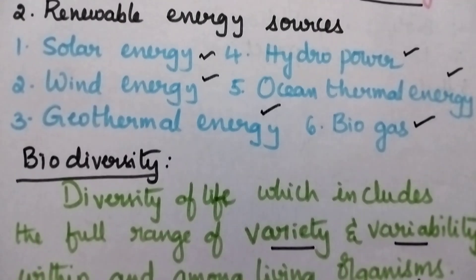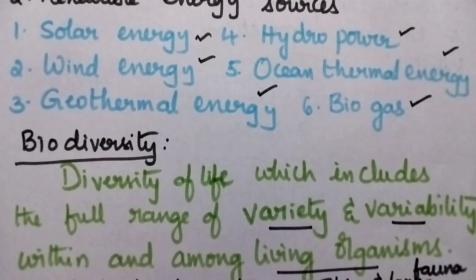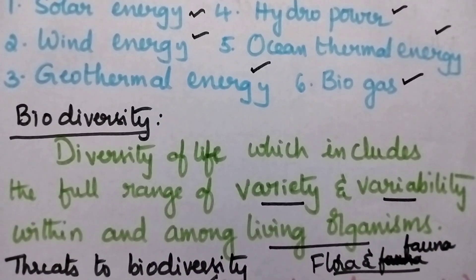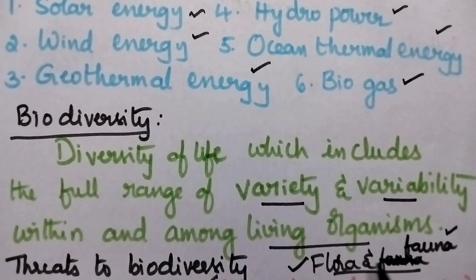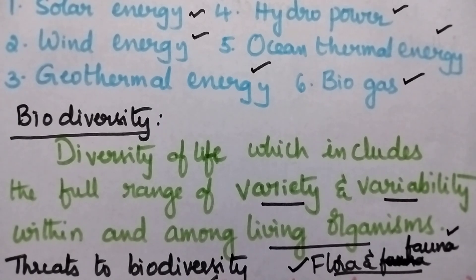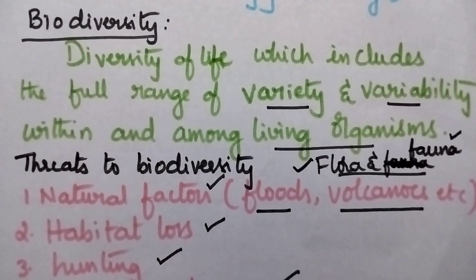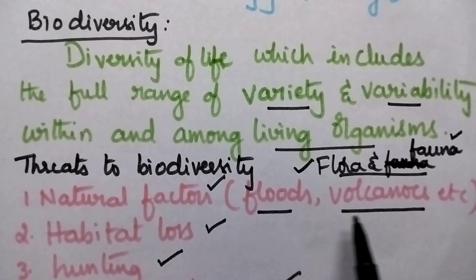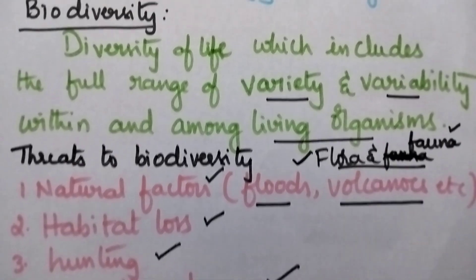Biodiversity means the diversity of life, which includes the full range of variety and variability within and among living organisms. It includes various varieties of flora and fauna — flora means the plant kingdom and fauna means the animal kingdom. There are several threats to biodiversity, including natural factors such as floods and volcanoes, habitat loss due to deforestation, hunting of animals and climatic changes.